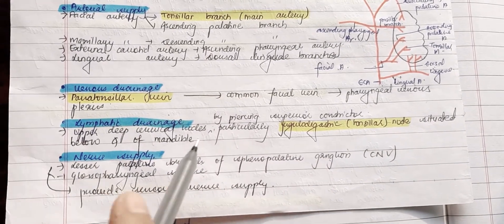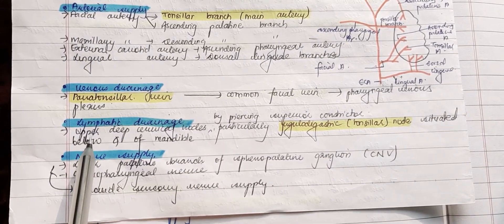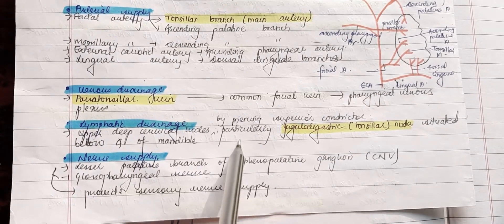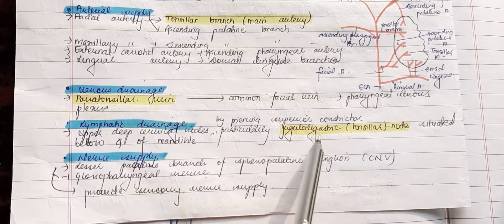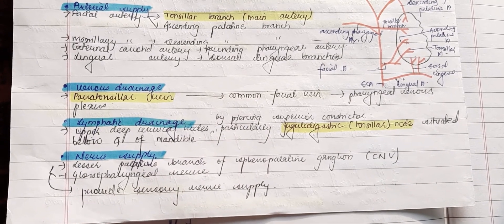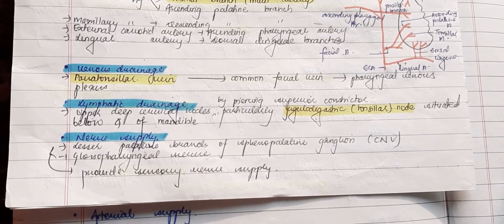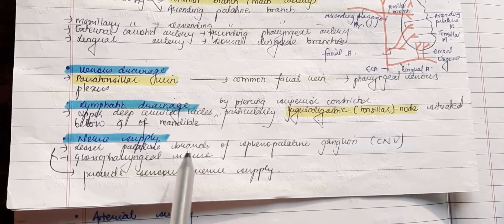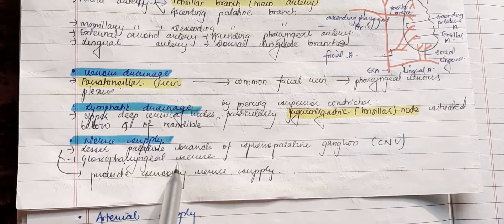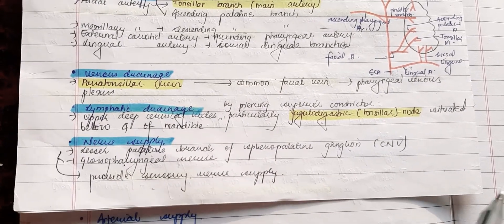Lymphatic drainage is to the upper deep cervical nodes by piercing the superior constrictor, particularly the jugulodigastric node situated below the angle of the mandible. The nerve supply of the tonsil is through the lesser palatine branch of the sphenopalatine ganglion and the glossopharyngeal nerve, which provide sensory innervation.